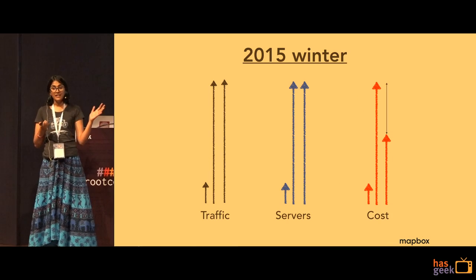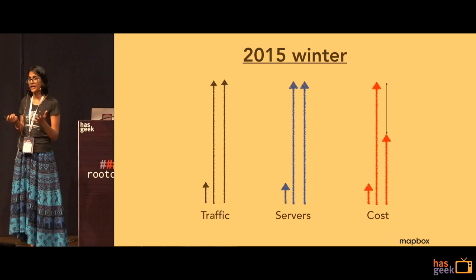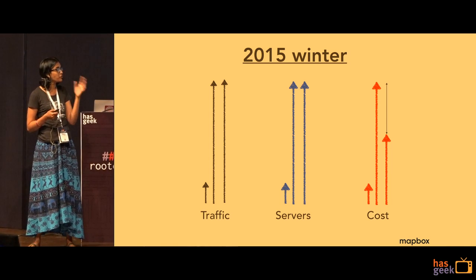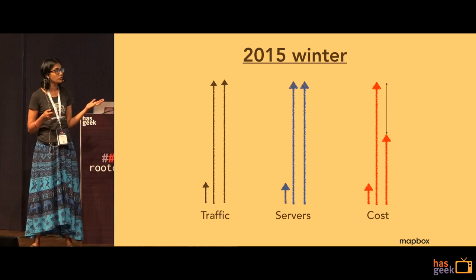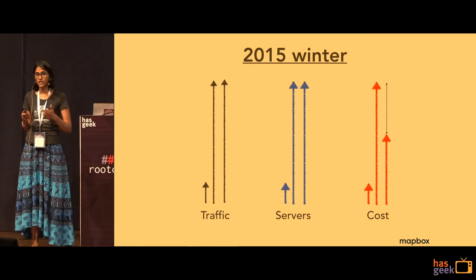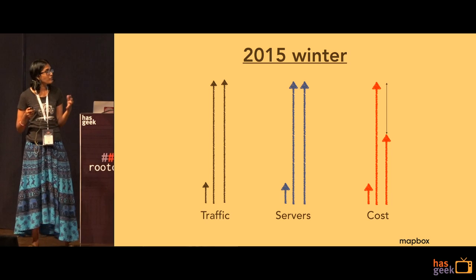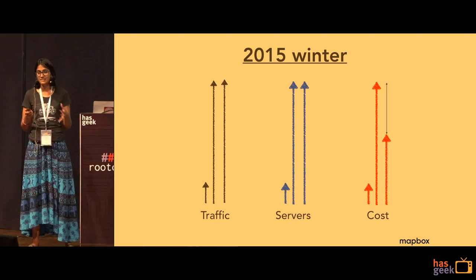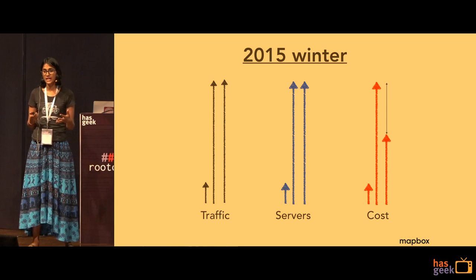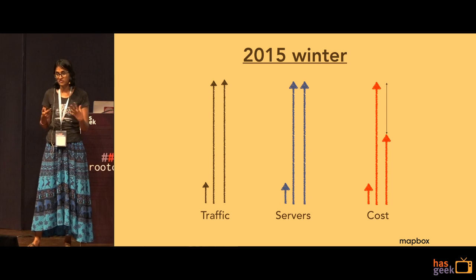It was winter 2015, and at Mapbox our traffic had reached a point where we definitely had to scale. The obvious answer would be to scale linearly, but this would also mean a linear increase in cost. So we wanted to mitigate this by designing a system that would be very highly available but could still run on spot instances.